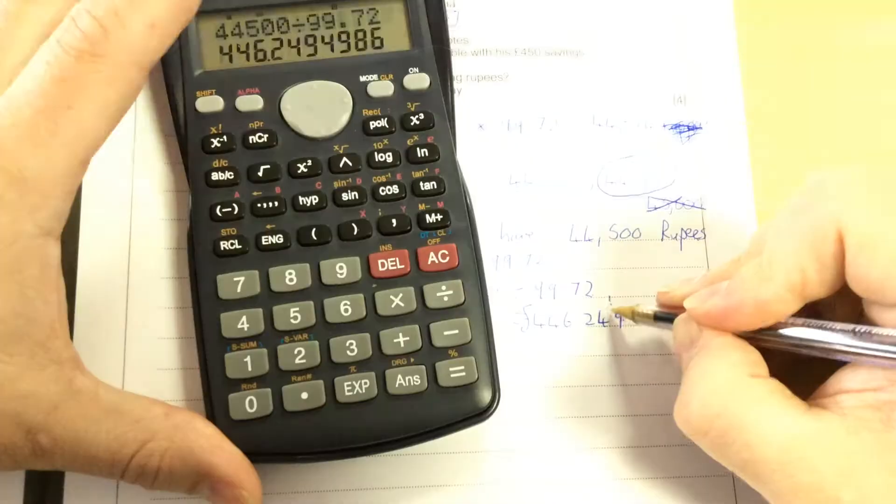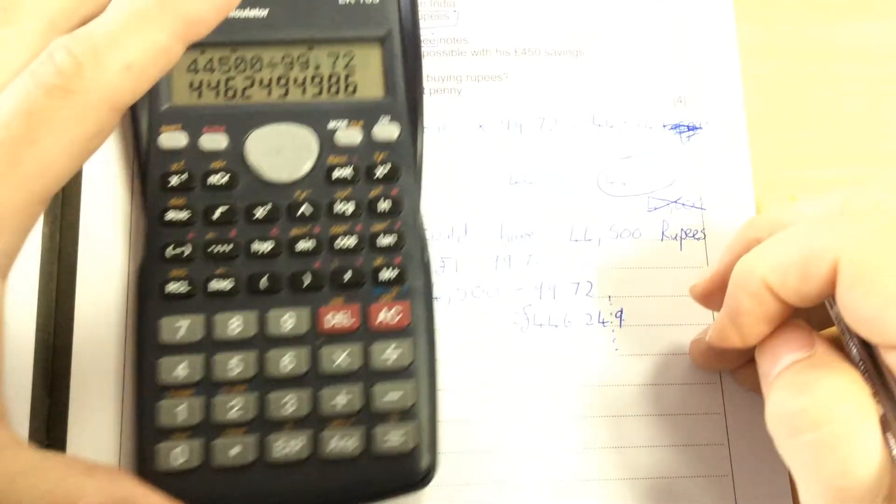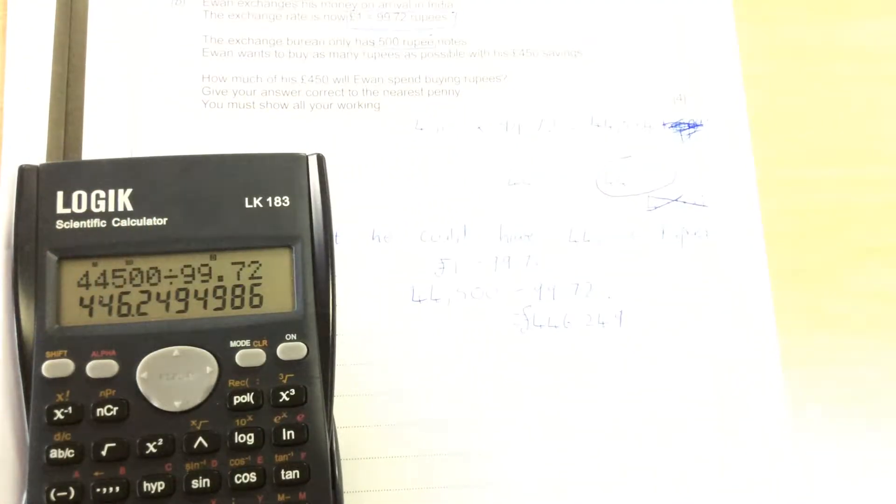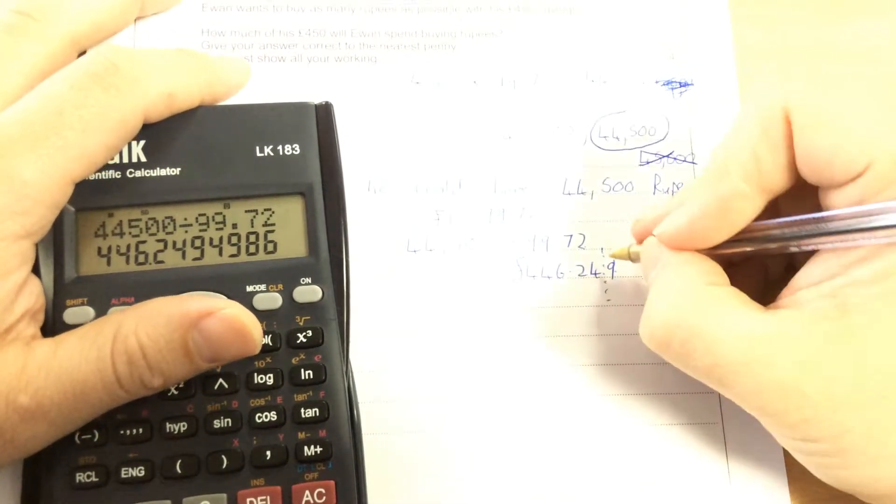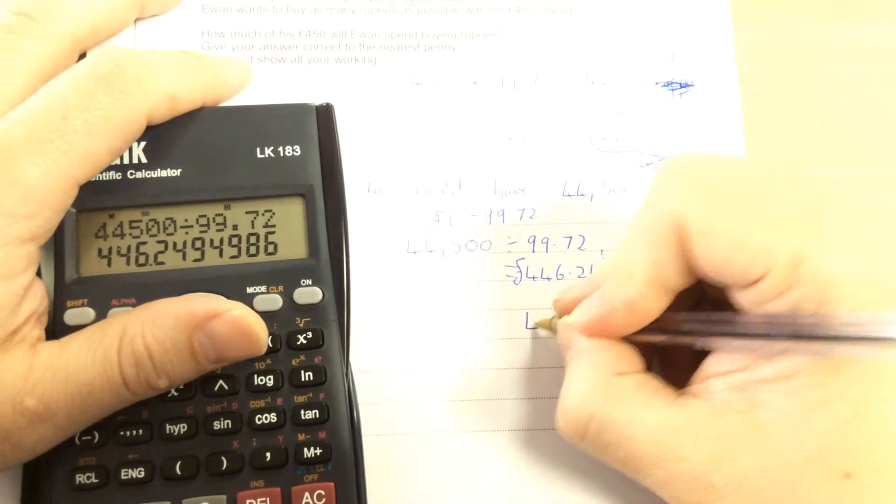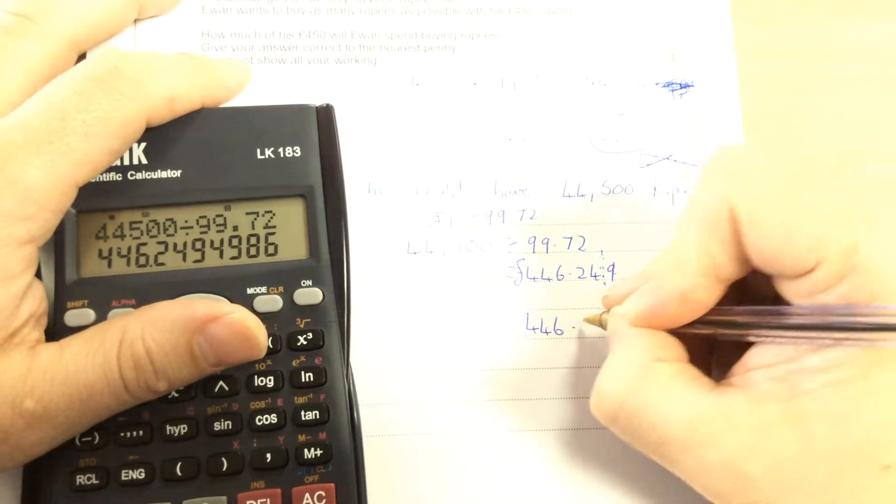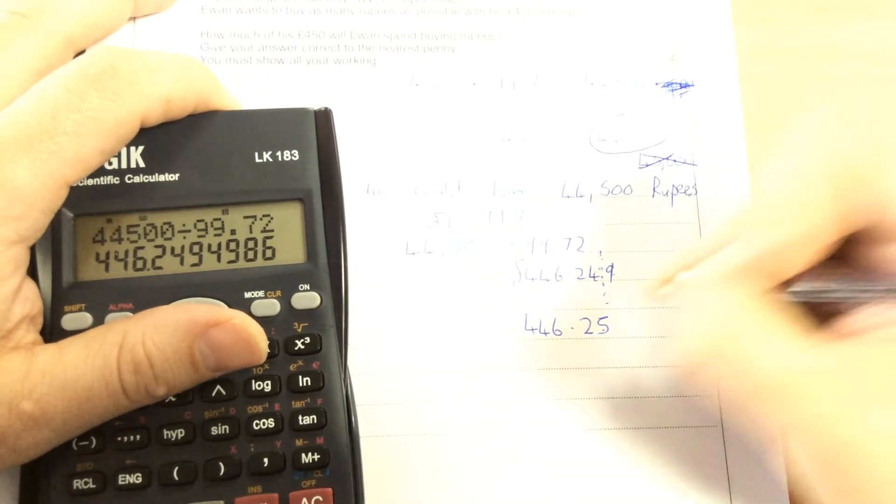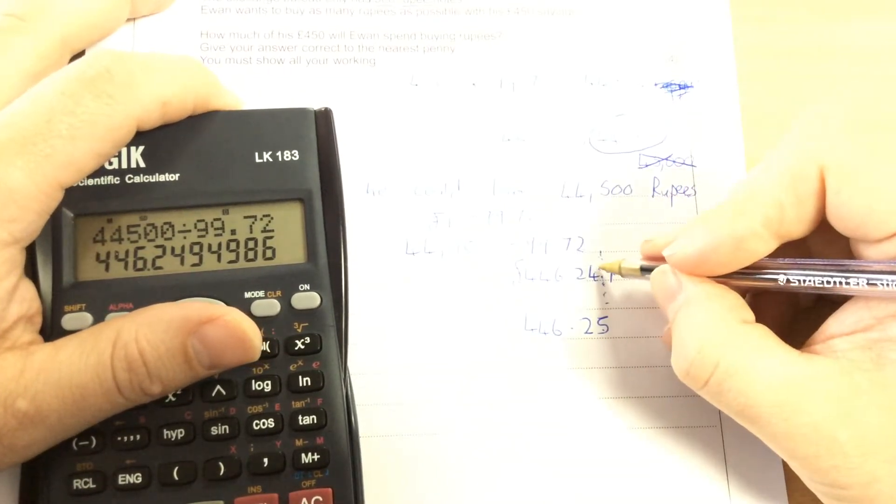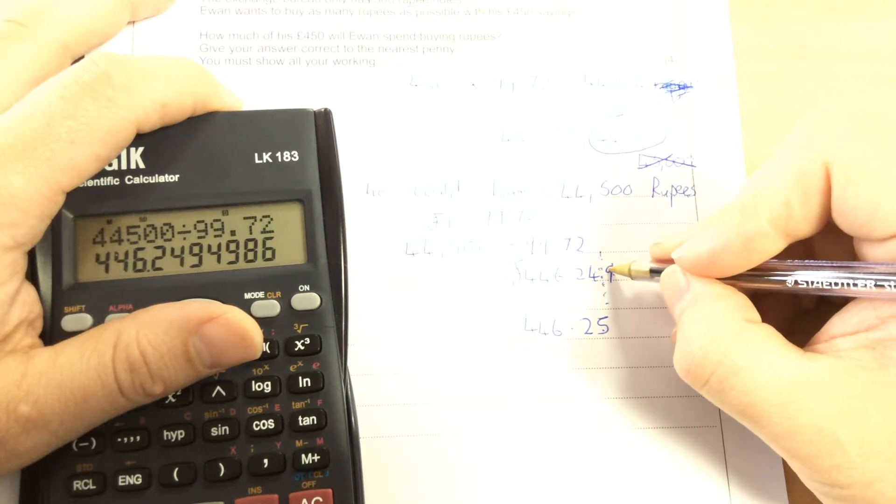When you're dealing with money, it's to two decimal places. So it's two after the point. Because you're rounding it after the four, it becomes £446.25 because the nine rounds up because it's higher than five.